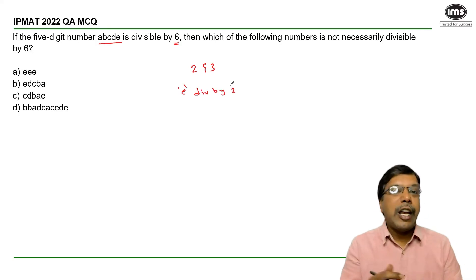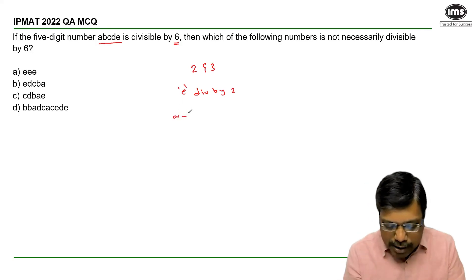Also, if the number is divisible by 3, the sum of the digits must be indeed divisible by 3.